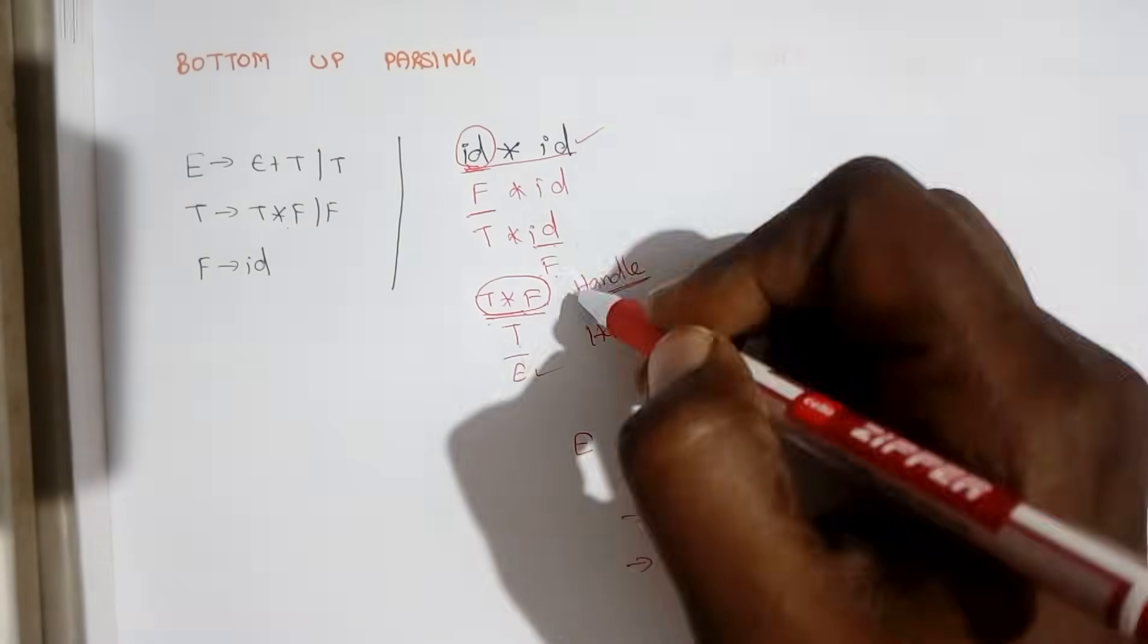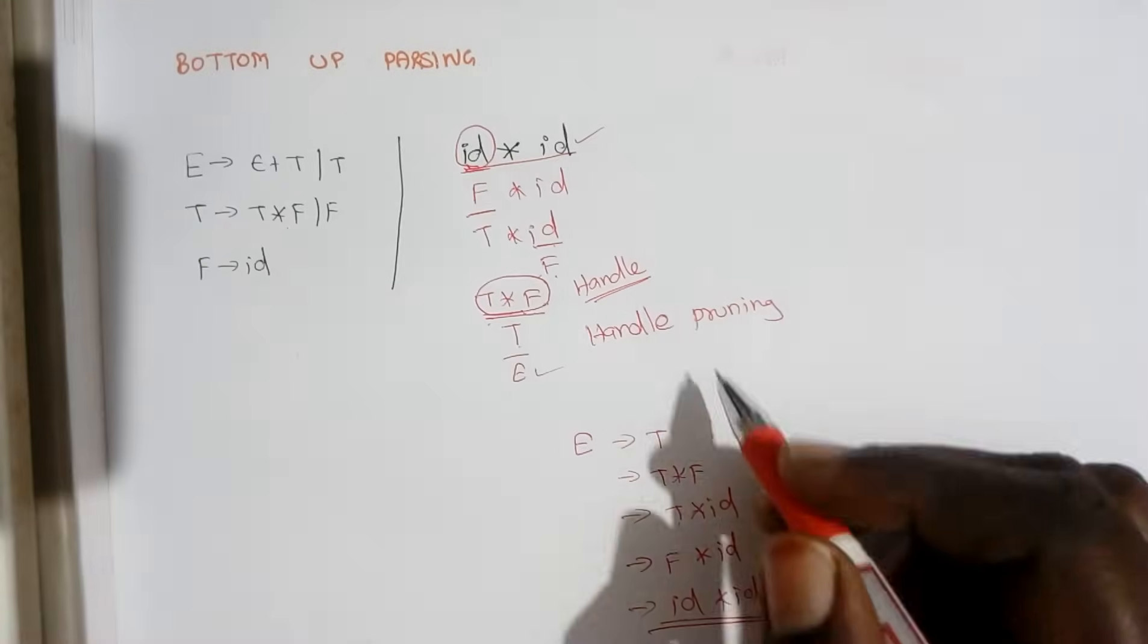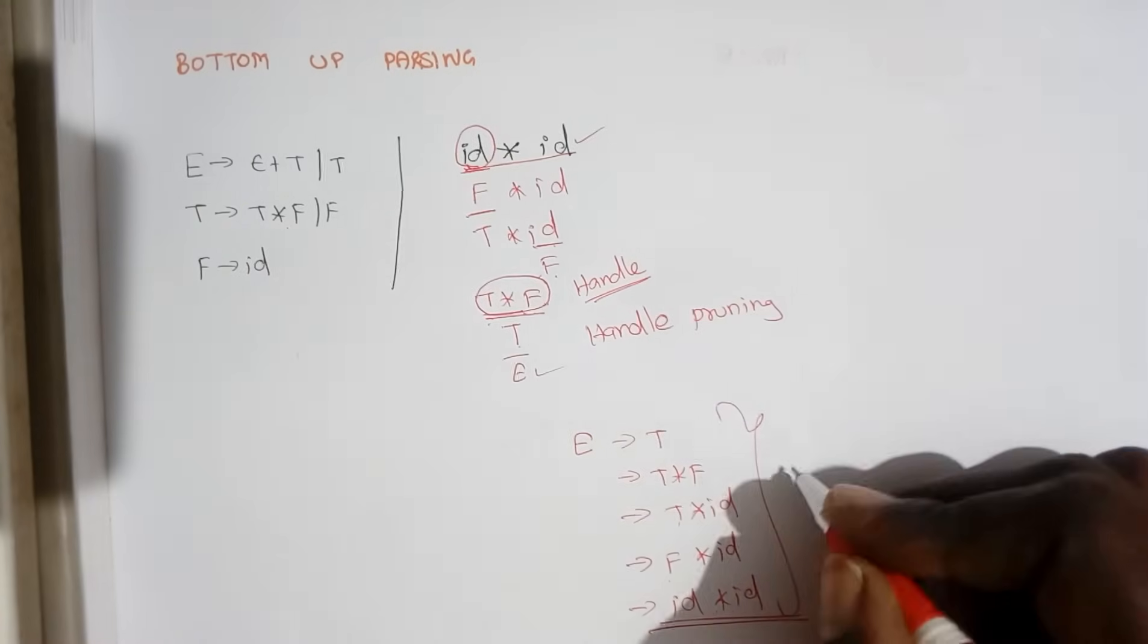I'm just writing this process in the reverse manner of it and this F is replaced with id star id. So when you look at it, this is your rightmost derivation.